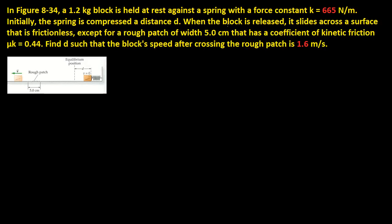When the block is released, it slides across a surface that is frictionless, except for a rough patch of width 5 centimeters that has a coefficient of kinetic friction μk = 0.44. Now we have to find d such that the block's speed after crossing the rough patch is 1.6 meters per second.